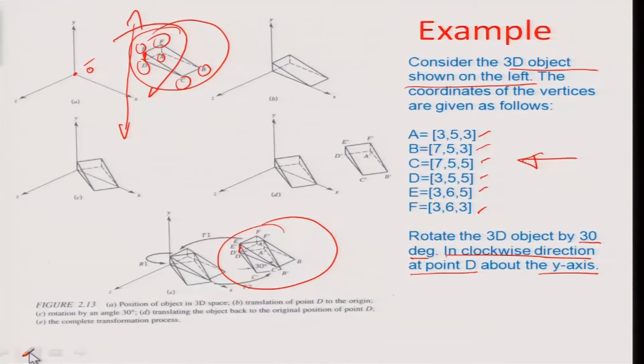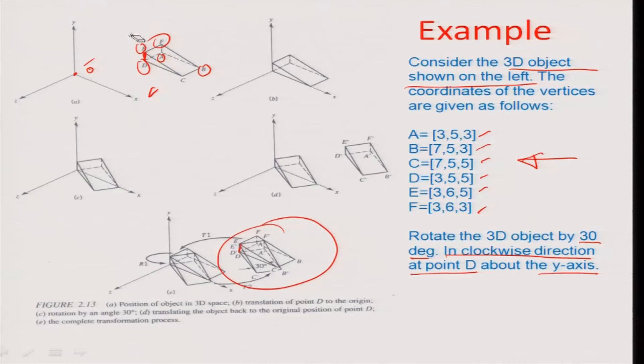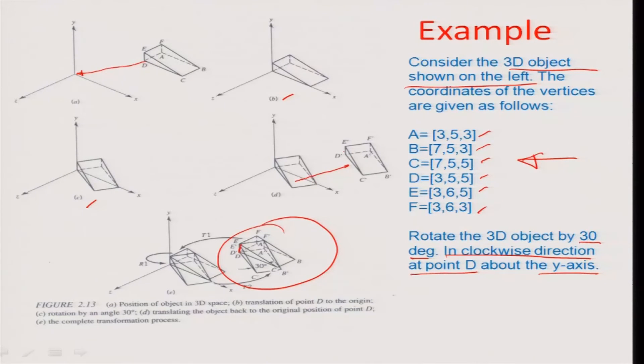Since rotations are performed with the object centered at the origin, you cannot rotate the object as it is in its current position. Therefore, you must first translate the object back to the origin, then perform the rotation there, and then translate the rotated object back to the initial point D in space. In the next module, I will work through how this transformation is possible mathematically and how to solve this transformation equation. Thank you.